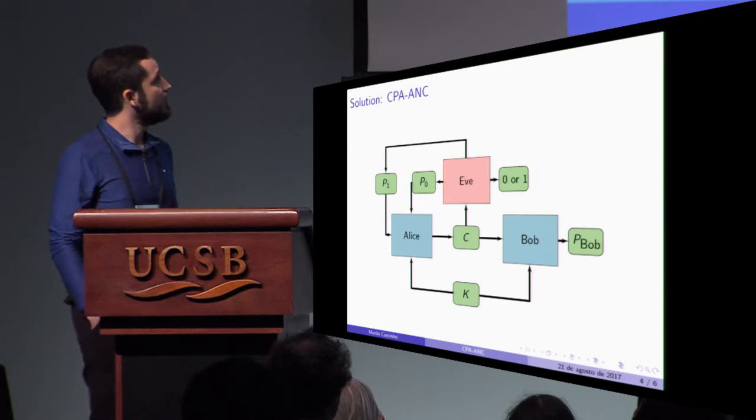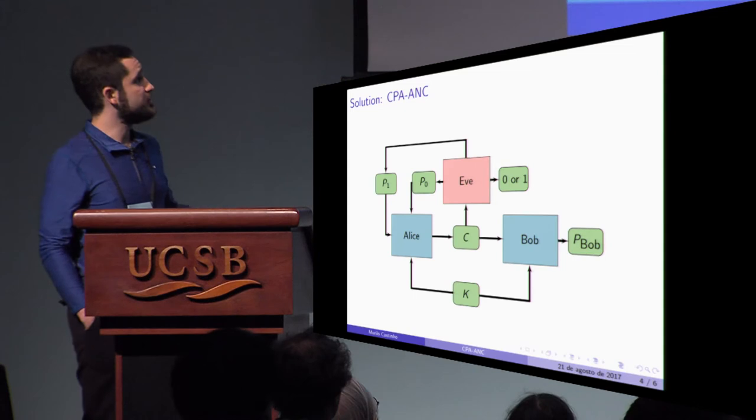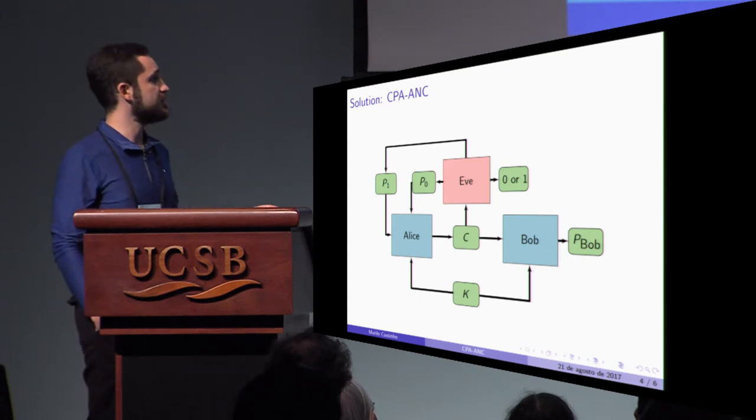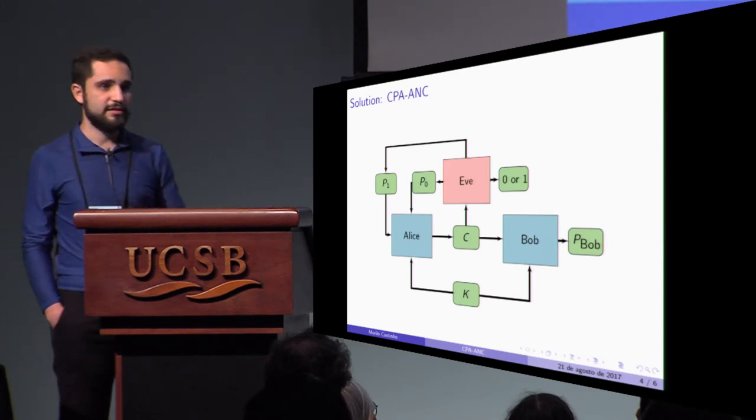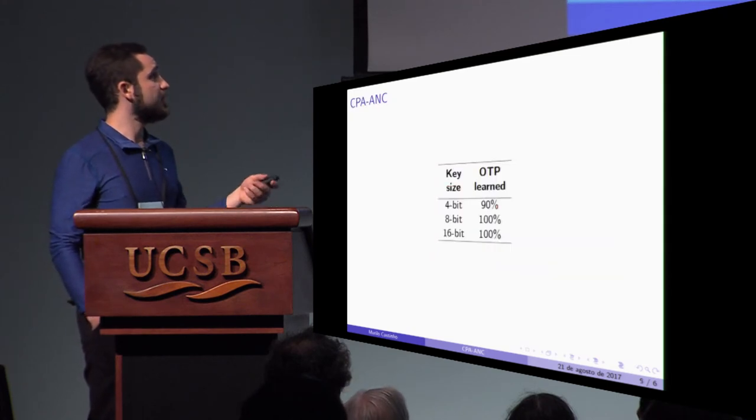So I used the chosen plaintext attack and Eve now chooses two plaintexts and sends to Alice. Alice chooses one, encrypts, sends to Bob, et cetera. So in this setup, I ran and now with the neural network, it could find the one-time pad.